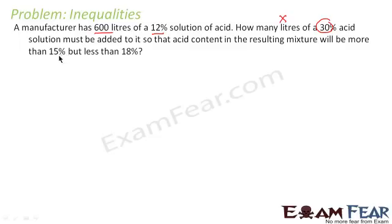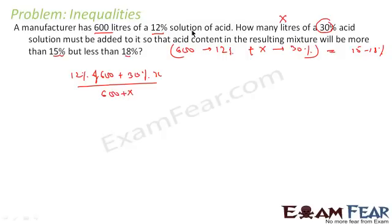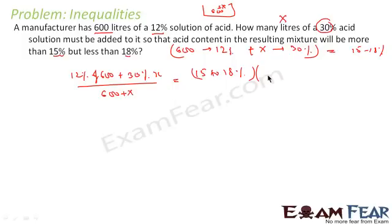He wants to add x liters of 30% solution so that the resulting acid concentration becomes 15 to 18%. So he has 600 liters of 12% and x liters of 30%. When he adds both, the total solution becomes 600 plus x, and he wants 15 to 18% of 600 plus x.